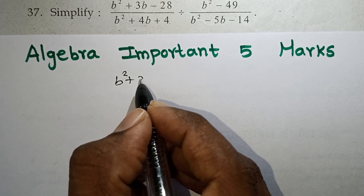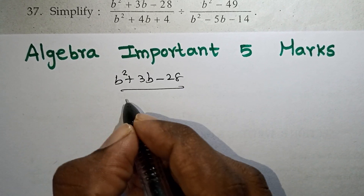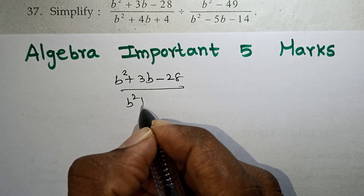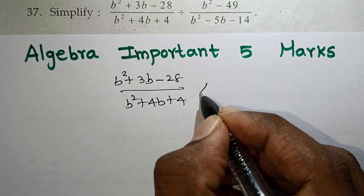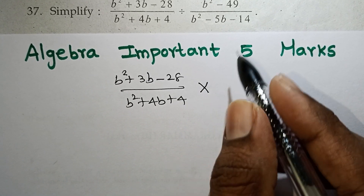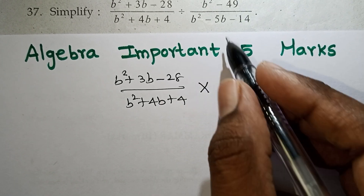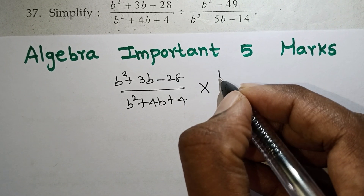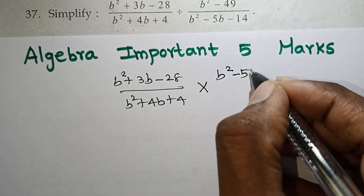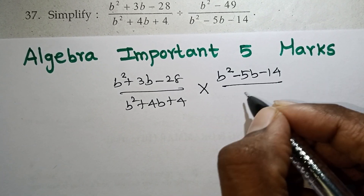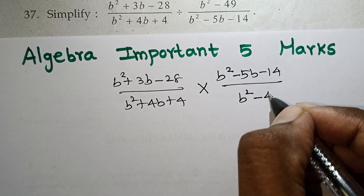So, b squared plus 3b minus 28 divided by b squared plus 4b plus 4. If you change the multiplication, automatically the 2 terms will be taken reciprocally. The first term's numerator becomes the denominator and the denominator becomes the numerator.